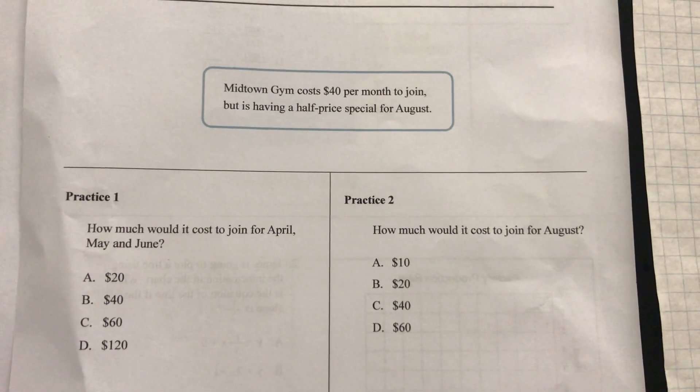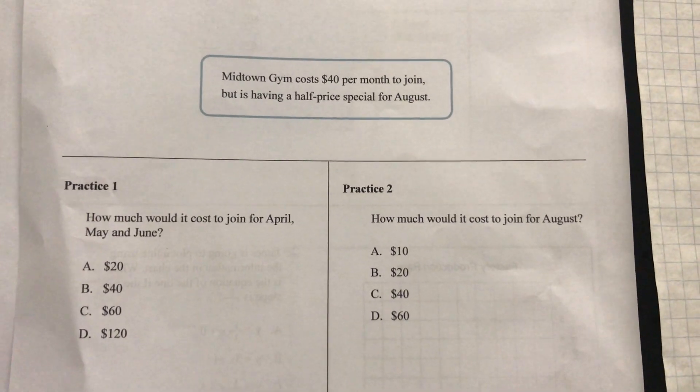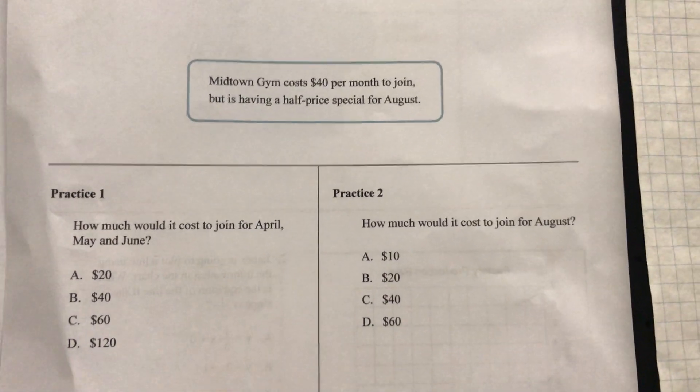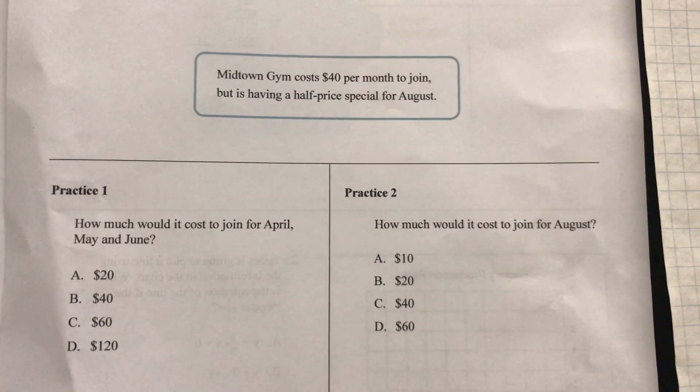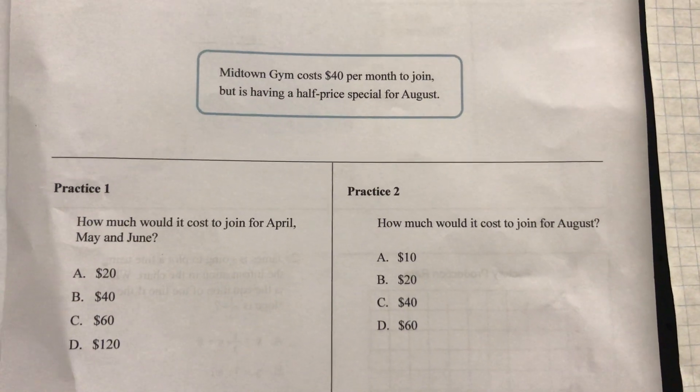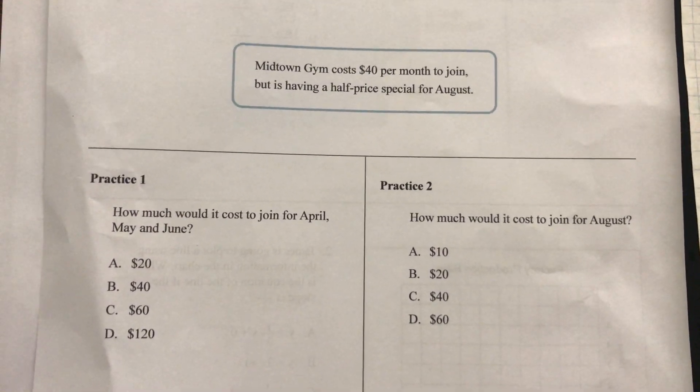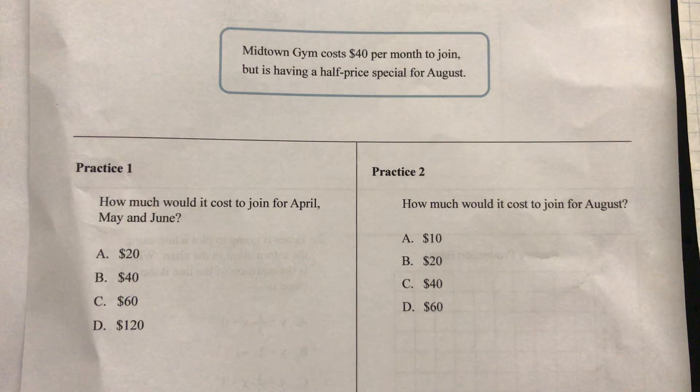Today we're going to practice the D-level questions, the more advanced questions for the CASAS Goals Math Assessment. So here we have two warm-up practice questions a little easier. It says Midtown Gym costs $40 per month to join, but is having a half price special for August. Question one, how much would it cost to join for April, May and June?